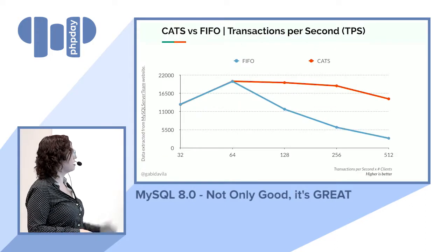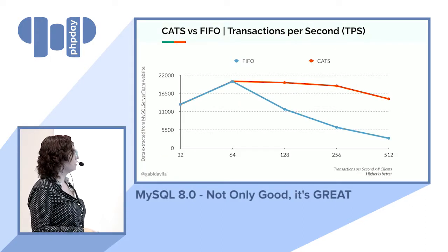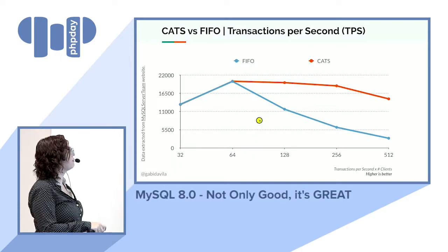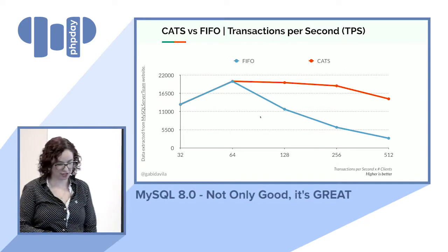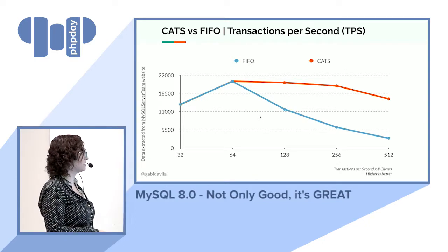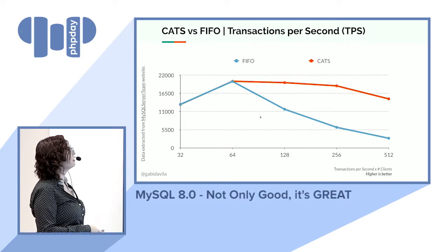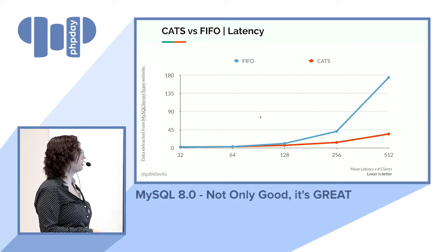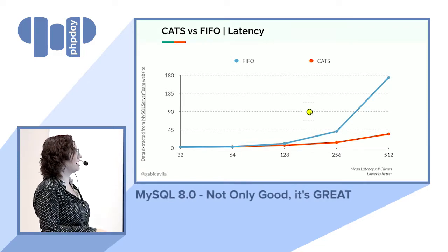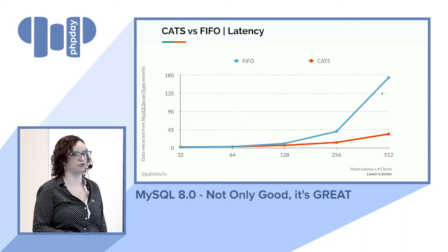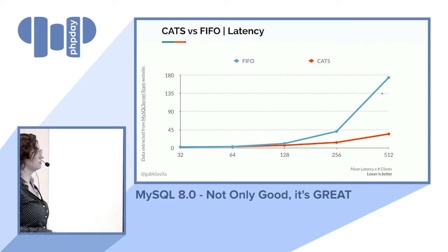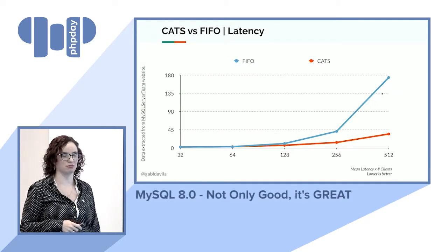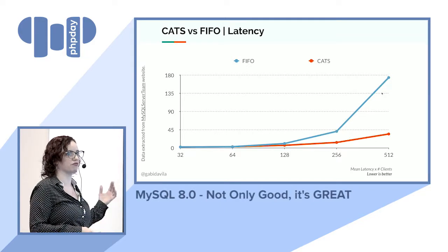Looking at this benchmark, higher is better for transactions per second. Starting at 64 clients, performance changes with the number of connected clients. For latency — lower is better — the latency with CATS is up to five times lower than the normal FIFO approach. That means MySQL 8 is faster under high loads than 5.7 was.